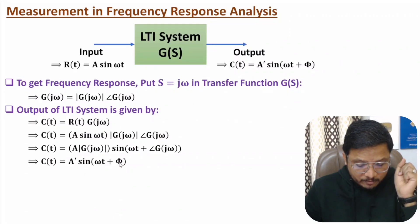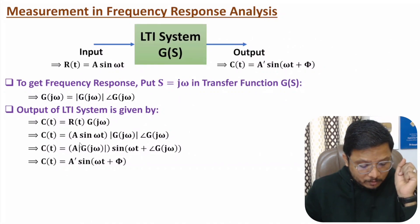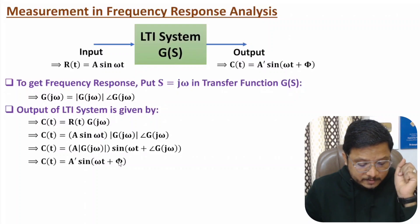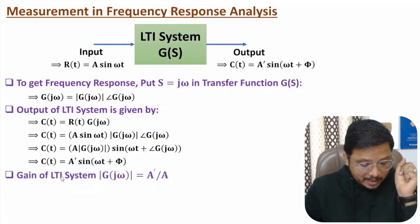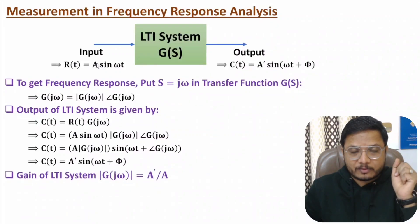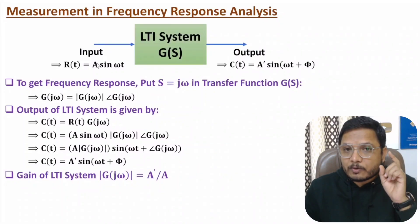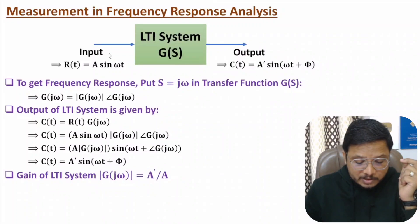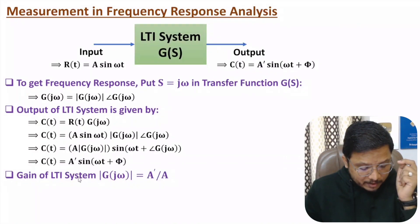So the output is A' sin(ωt + φ), where A' equals A (input amplitude) multiplied by the magnitude of this LTI system, and φ occurs because of the phase of this system. So gain of the system is A'/A. In the lab, you give a sinusoidal input and measure the output; the ratio of output amplitude to input amplitude gives the gain of the system.